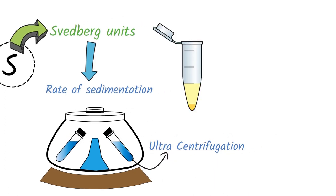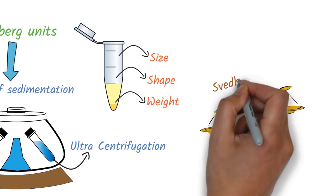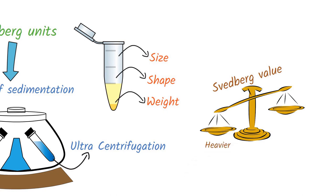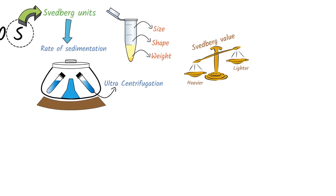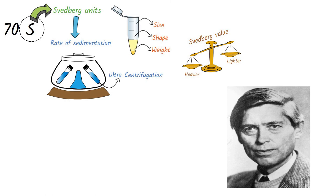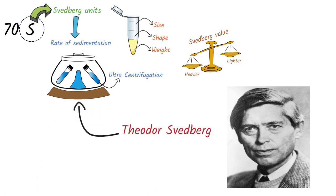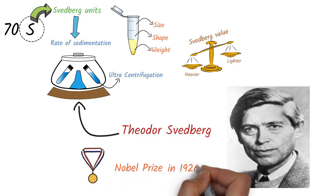The sedimentation rate depends on the size, shape, and weight of the molecule. For example, the Svedberg value is greater for heavier molecules than for lighter ones. These units are named after Theodor Svedberg from Sweden, who discovered the principle of ultracentrifugation and was awarded the Nobel Prize in 1926.